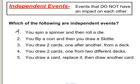Number one: you spin a spinner and then you roll a die. Whatever happens on the spinner does not change anything about when I roll a die — they don't influence each other. So these are called independent events. Number two: you flip a coin and then you draw a Skittle out of a bag. These are also independent events, because flipping a coin will have no impact on the Skittle you draw.